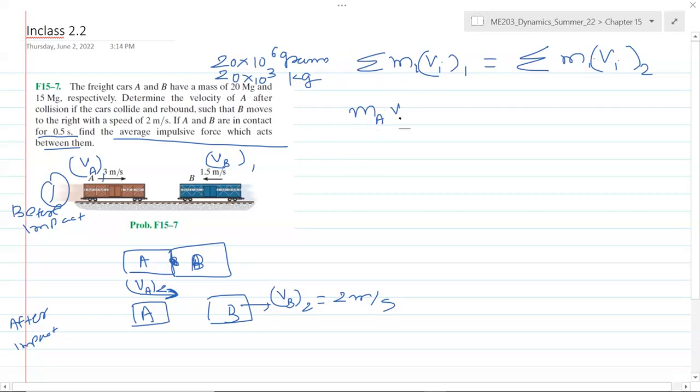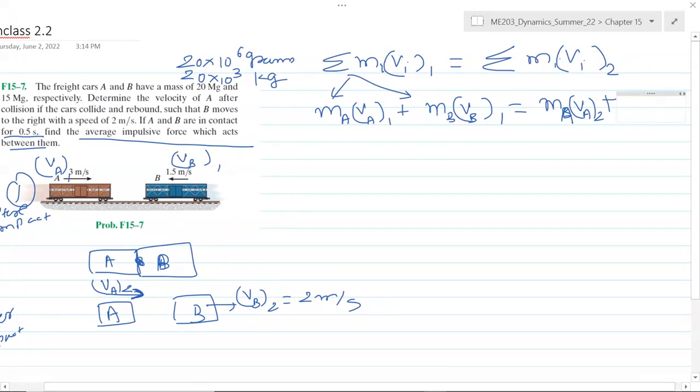This can be written as m_A v_A1 plus m_B v_B1—that is initial momentum if we have expanded the sigma terms. So initial momentum of car A and B is same as final momentum: m_A v_A2 plus m_B v_B2. And we assume that going right is positive.